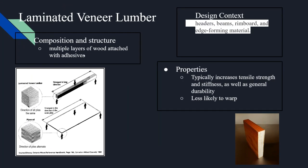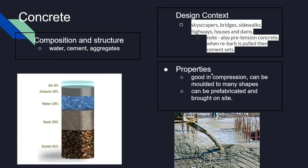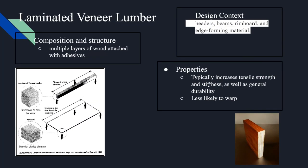Laminated veneer lumber is basically laminated wood — multiple layers of wood attached with adhesives. This typically increases tensile strength, stiffness, and general durability, and makes it less likely to warp. It has good compressive strength when pushed together and good tensile strength when pulled apart. In design, it is used in beams, rim boards, edge forming materials, and headers.